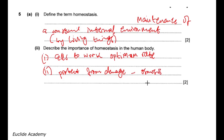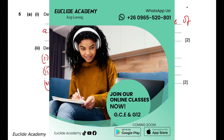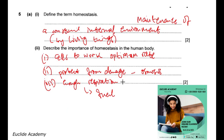So homeostasis is there to protect the cells from being damaged, especially from the process of osmosis — it protects body cells from absorbing too much water or losing too much water. A third point: it ensures that there is enough fuel for respiration, so that the body has enough energy to operate, since respiration requires oxygen and glucose to produce energy.